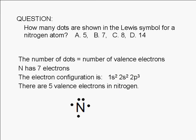This is the Lewis symbol for a nitrogen atom. The symbol for the element is surrounded by 5 dots. The correct answer is 5.